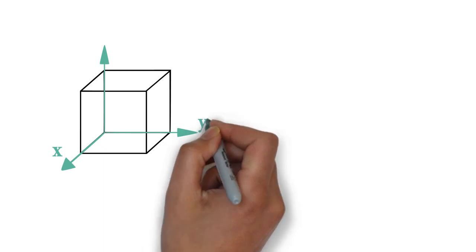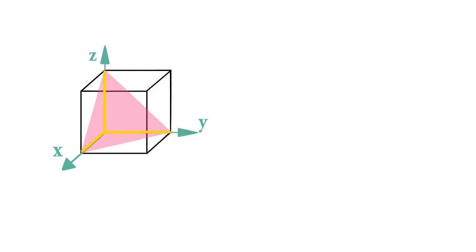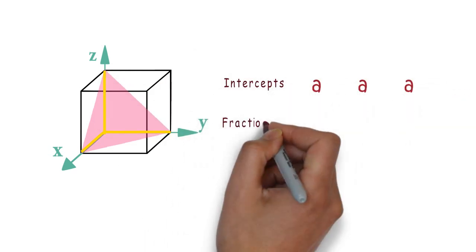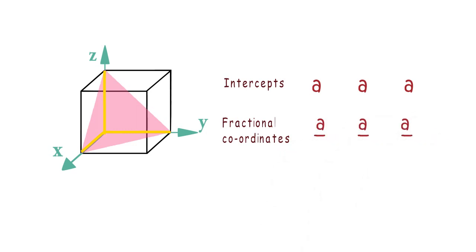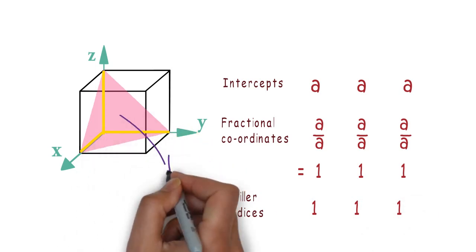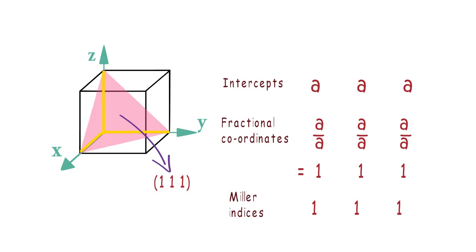Let's take another example of a plane like this. In this case we can easily see that the intercepts of the plane are a in all three directions. So fractional coordinates here will become 1, 1, and 1, and when we take its reciprocal then we will have Miller Indices as 1, 1, and 1. So this plane can be represented by (1 1 1) under a small bracket without any comma.